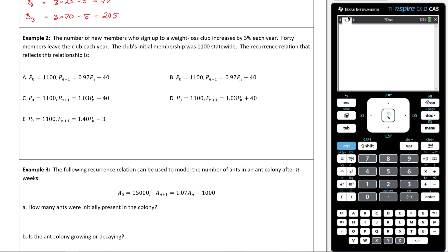Okay, let's give it a read. It says the number of new members who sign up to a weight loss club increases by 3% each year. 40 members leave the club each year. The club's initial membership was 1,100 statewide. The recursion relation that reflects this relationship is what?